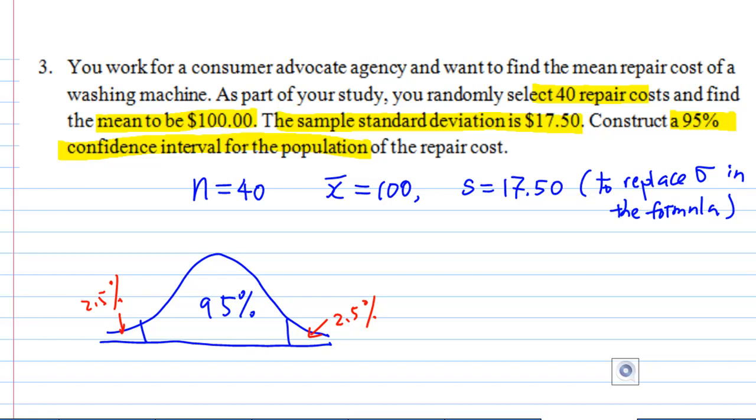Using the standard normal graph, the point we are looking for is z_{2.5%}, which is z_{α/2}. And what is this number? z_{2.5%}. Using the standard normal, we know that this is 0 at the center and the tail is 2.5%.